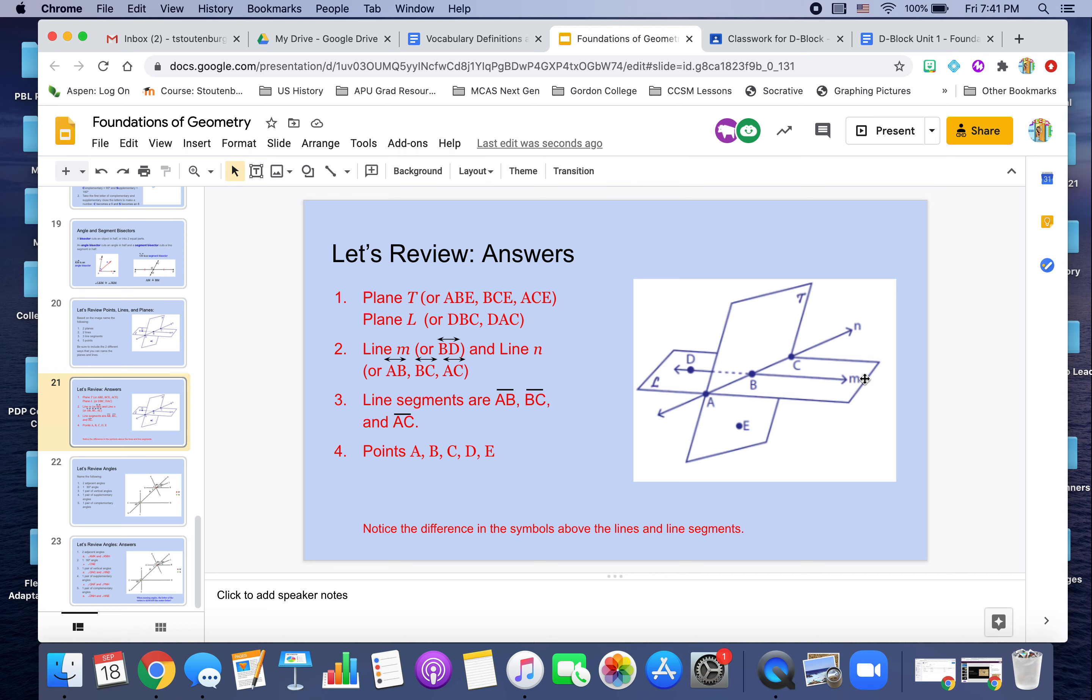And then of course, line M here, I can identify as line M or line BD. And remember when we're using the shorthand with the two letters, we always have to put that line symbol above the letter. So I know it's a line as opposed to a line segment, which is where we have the two end points.